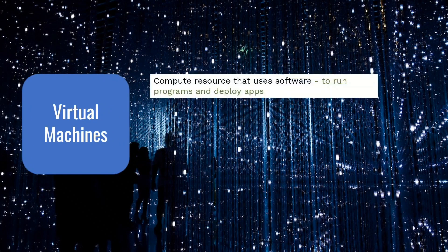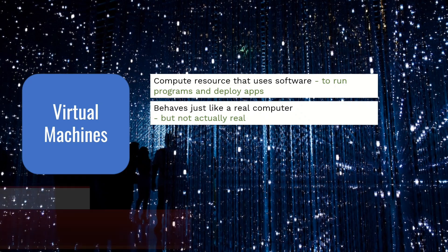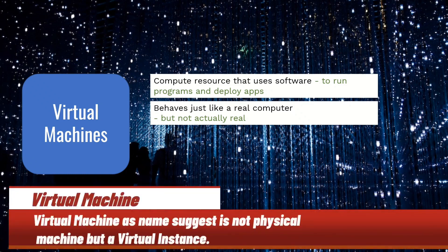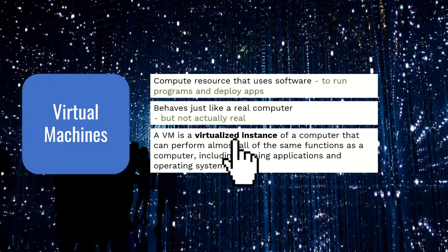A virtual machine is a compute resource that uses software instead of a physical computer to run programs and deploy apps. It is basically a computer file — usually called an image — that behaves just like a real computer. It can totally replicate your entire computer experience. Virtual machines allow a business to run an operating system that behaves like a completely separate computer. Just keep in mind that virtual machines are virtualized instances of a computer that can perform almost all the same functions including running applications and an operating system.